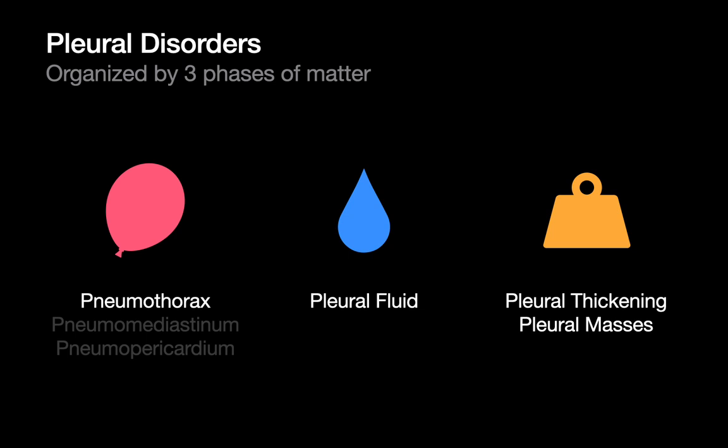With pleural disorders, I find it's nice to break things down according to the three phases of matter: gas, liquid, and solid. In this talk, we're going to first start with pneumothoraces, then move on to pleural effusions, and then finish with pleural thickening and masses. We'll also spend a little time talking about pneumomediastinum and pneumopericardium. Because the diagnoses of pneumothoraces and pleural effusions are relatively trivial on chest CT, we'll be primarily focusing on chest x-ray appearances for the first two portions of this talk.